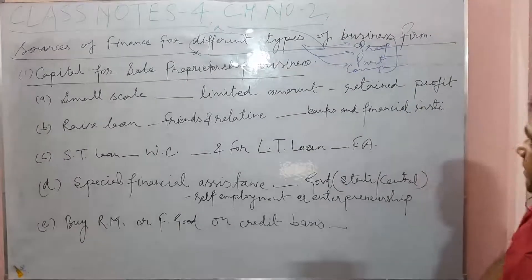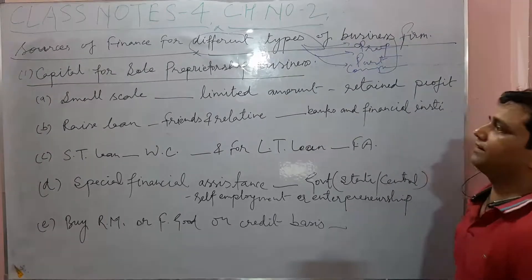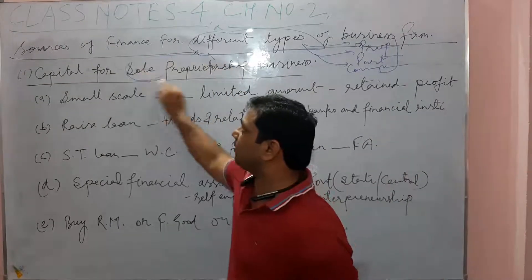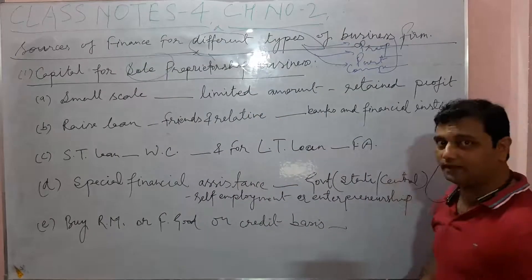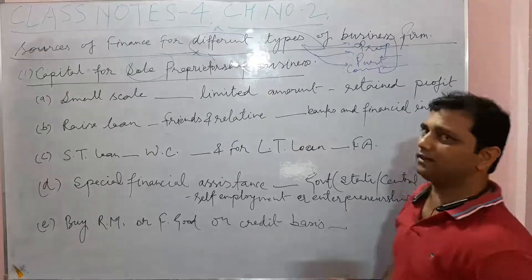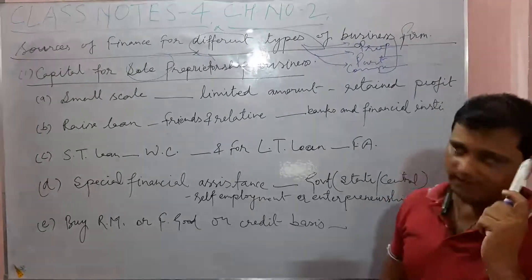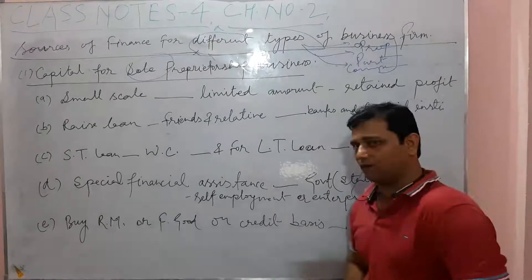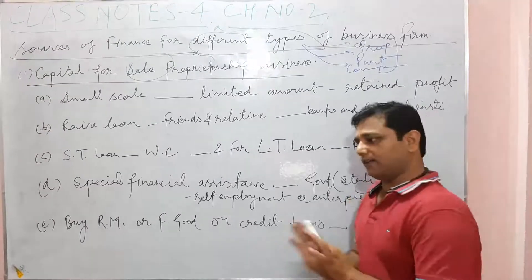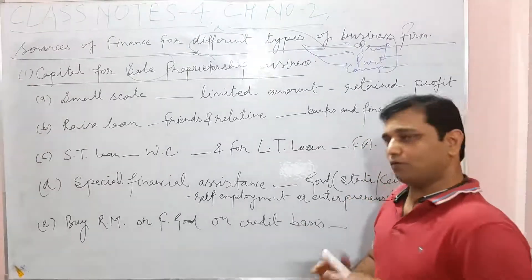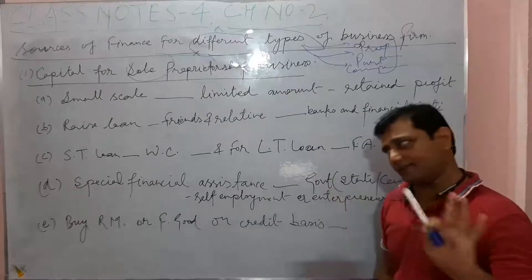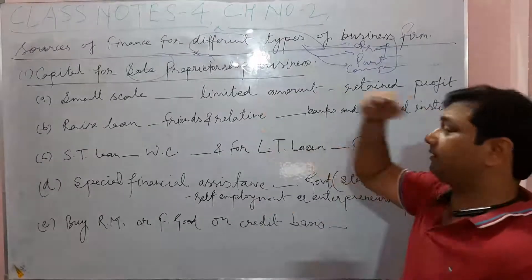First, we will study about the capital for sole proprietorship. Proprietor means a single person — the person who is individually doing their business — that is called sole trader or sole proprietorship. 'Sole' means single, alone. That person invests their capital alone and manages their business affairs. I think all of you have studied this in Class 11.